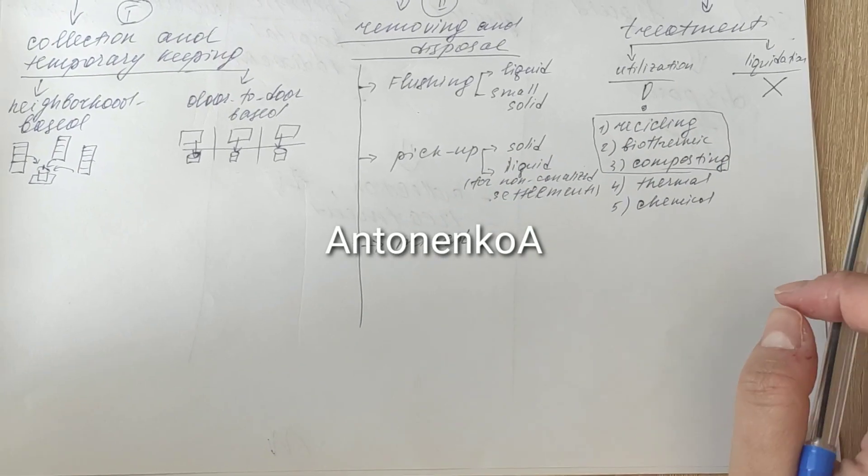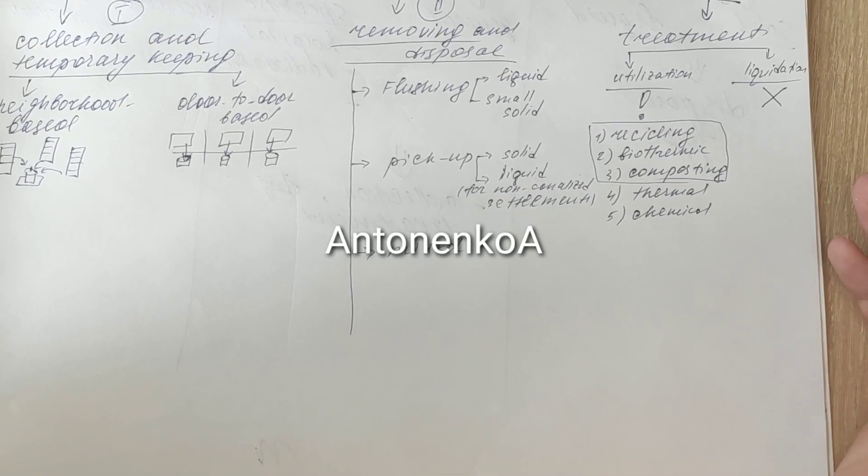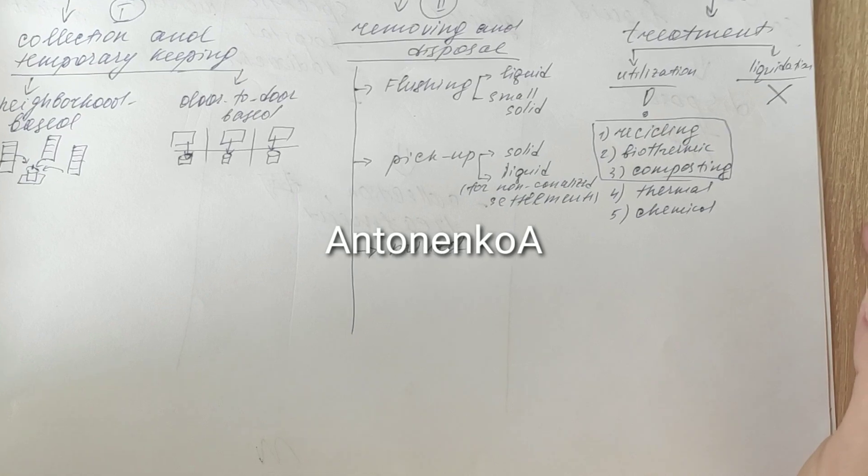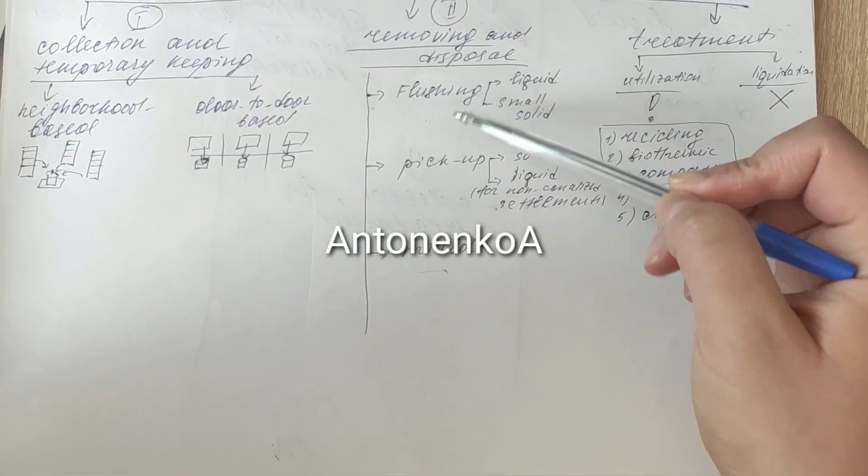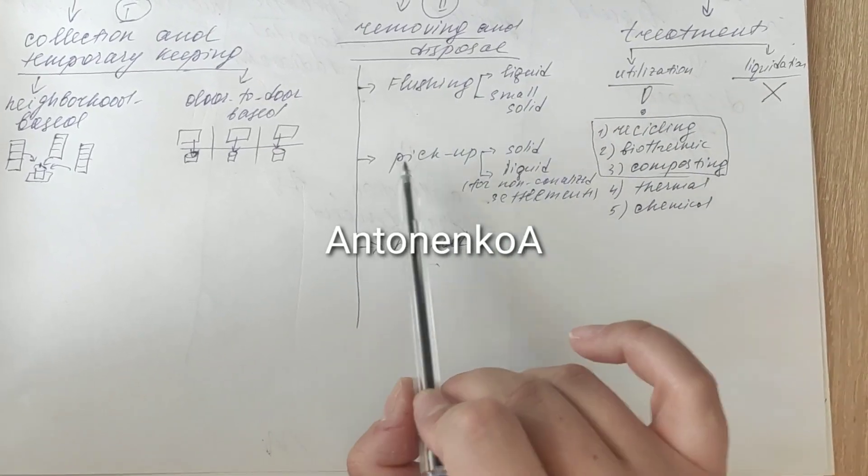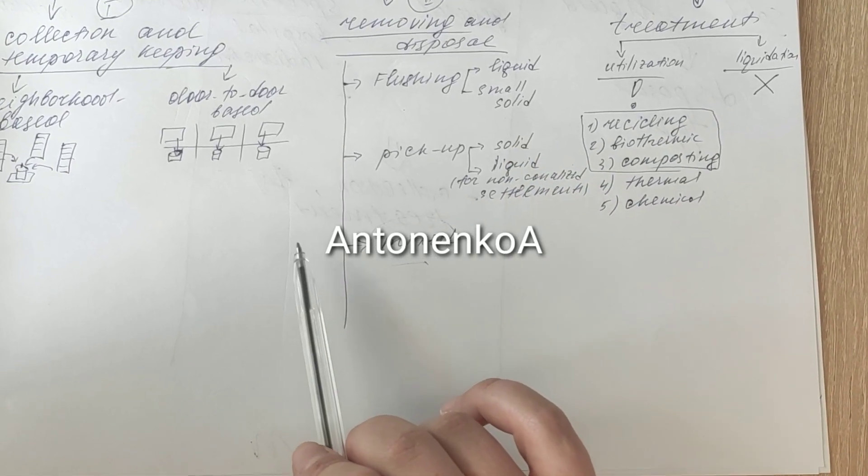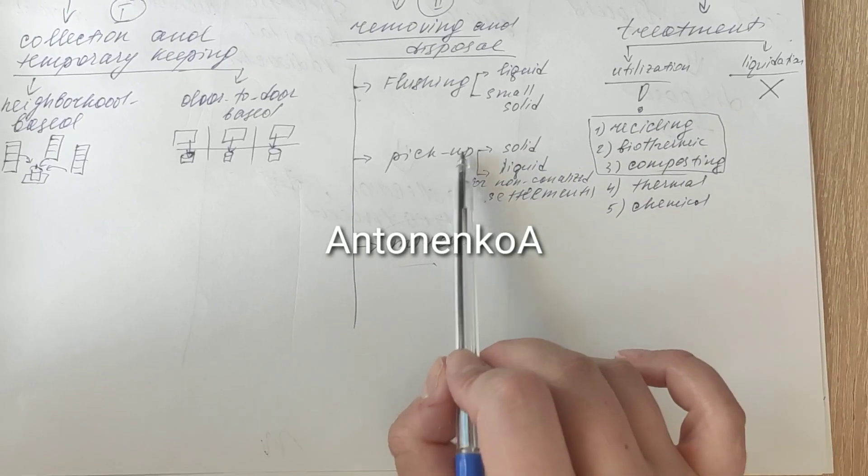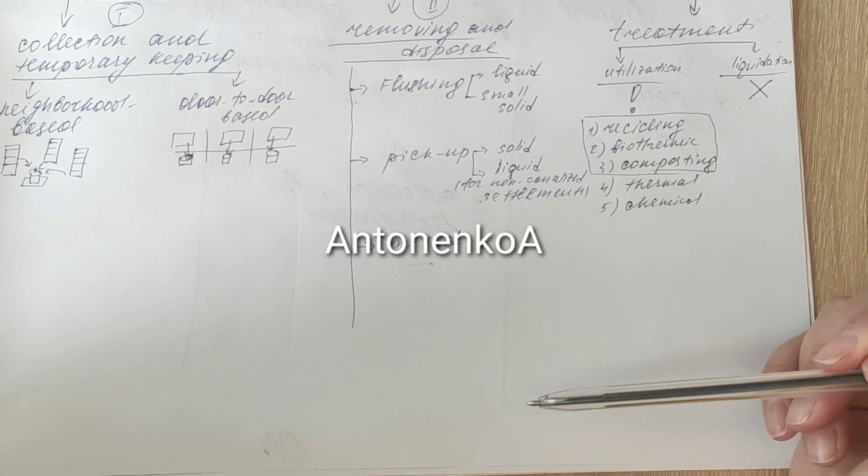Except physical state, type of removing depends on presence of canalization in the settlement. If the settlement is canalized, we will use mostly mixed. Mixed includes both flushing and pickup. Flushing for liquid and small solid and pickup for big solid waste. If the settlement is non-canalized, we will use only pickup for solid and liquid waste both.